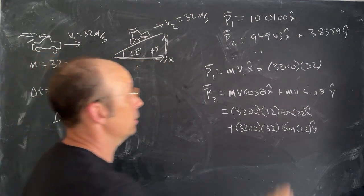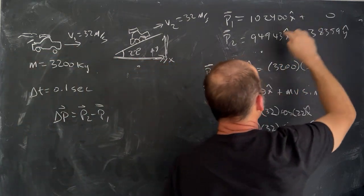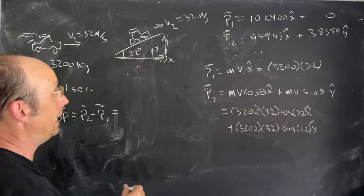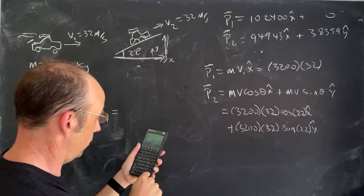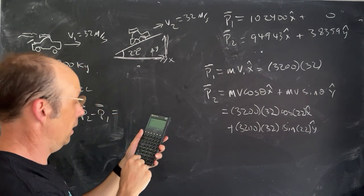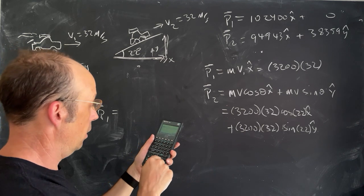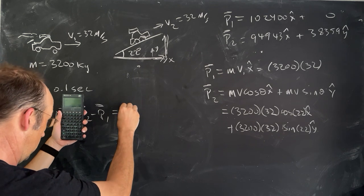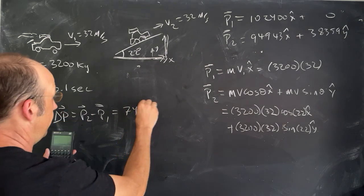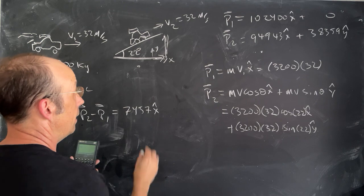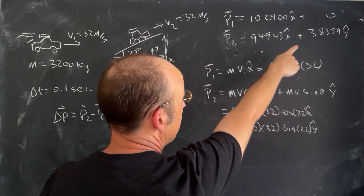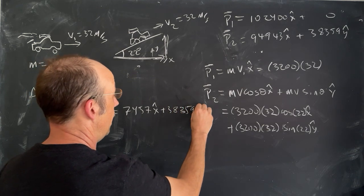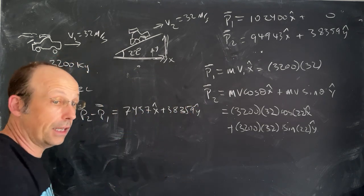Okay, so now we can do this subtraction because this is plus 0. So, I'm going to say P2 minus P1. So, I can take this minus that, and that's going to be my x component for delta P. Let's just start over. 102400 enter 94943 minus, I get 7457 x-hat. And then, in the y direction, my final y is that minus 0. So, it's just going to be plus 38359 y-hat. And that's in kilogram meters per second.